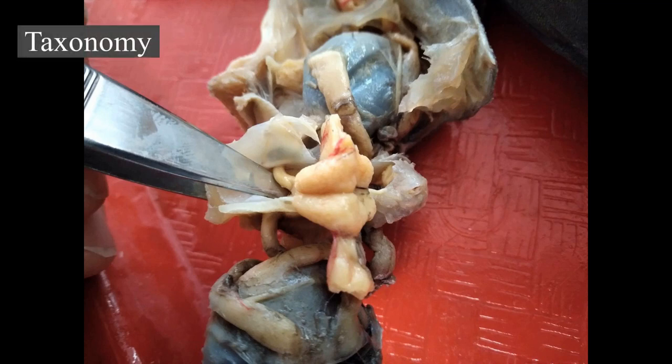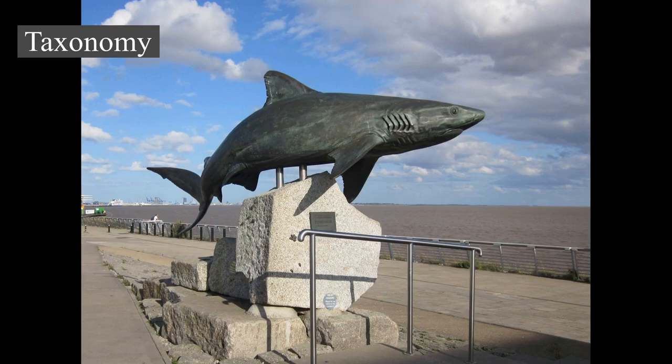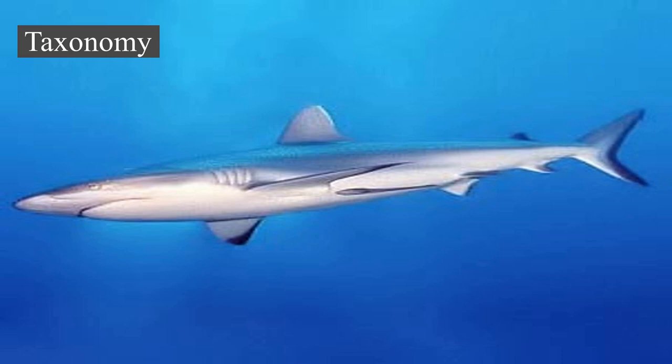Sharks belong to the superorder Selachomorpha in the subclass Elasmobranchii in the class Chondrichthyes. The Elasmobranchii also includes rays and skates. The Chondrichthyes also includes chimeras. It was thought that sharks form a polyphyletic group — some sharks are more closely related to rays than to some other sharks — but current molecular studies support monophyly of both groups of sharks and batoids. The superorder Selachomorpha is divided into Galea (or Galeomorphii) and Squalea (or Squalomorphii). The Galeans are the Heterodontiformes, Orectolobiformes, Lamniformes, and Carcharhiniformes. Lamnoids and carcharhinoids are usually placed in one clade, but recent studies show lamnoids and orectolobiforms are a clade.